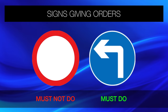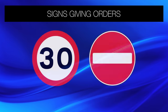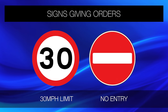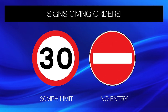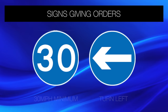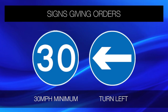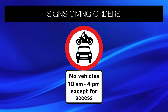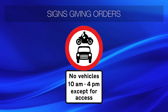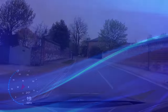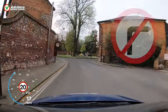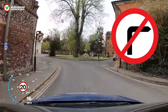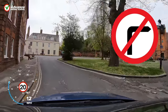Circular signs give us orders which we must obey. Signs with red rings tell us what we must not do, such as not exceed 30mph or we must not enter a road. Signs with blue circles generally tell us what we must do, such as stay above a minimum speed of 30mph or to turn left. If there is a plate below the sign it is to qualify the main sign's message. At this junction we can see several signs stating that we must not turn right, so we have to turn left or go ahead.